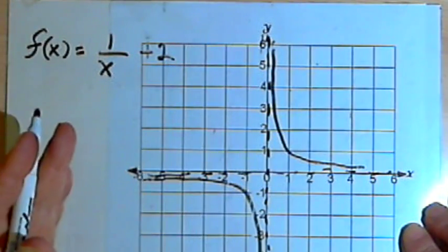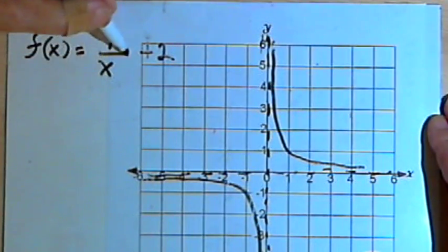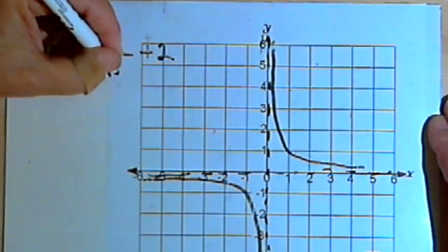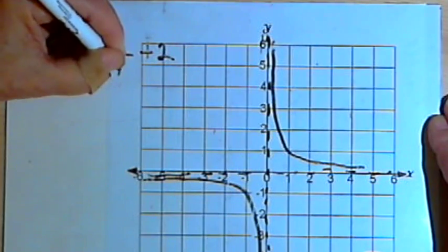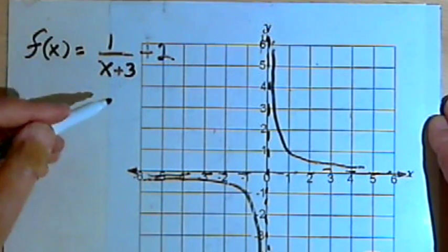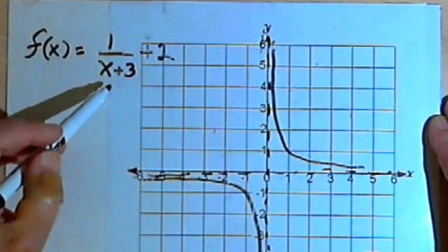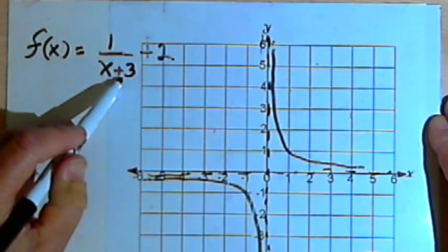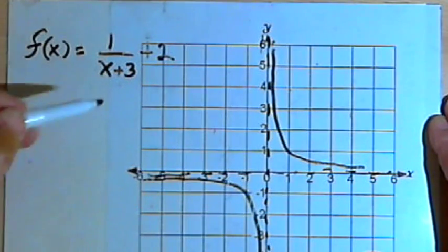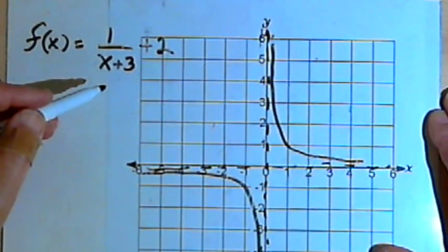If I want to shift it to the left or the right, I can add or subtract something from the x in the denominator. So if I turn 1 over x into 1 over x plus 3, then I'm going to shift the entire graph 3 units to the left. If I add a positive number to the x, the graph shifts left that many units. If I add a negative number to the x, the graph shifts right that many units.